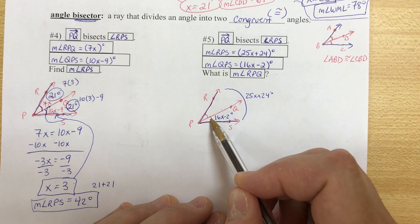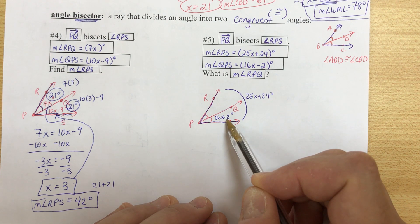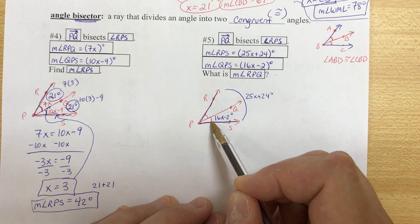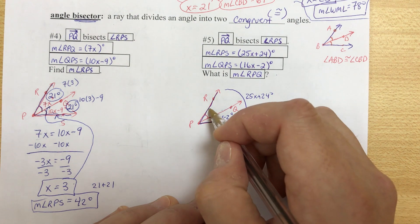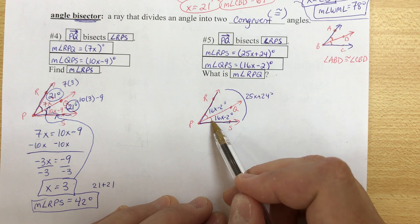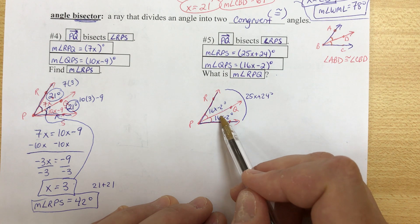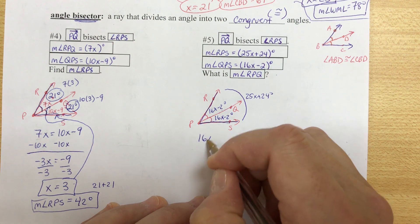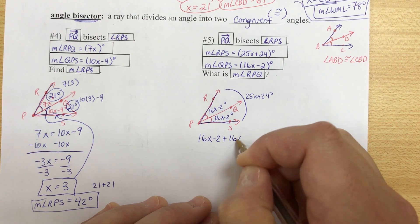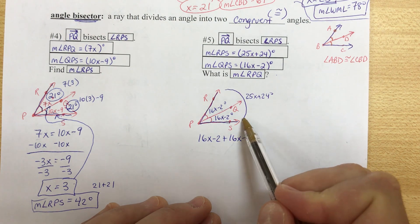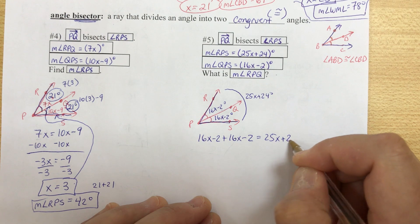These are congruent. Now I don't know what 16x minus 2 is. I don't know x. However, if this angle is 16x minus 2, so is this, because I know that they're equal measures, because they're congruent. Now again, I'm not going to say this equals itself, because I can't solve that. I just get zero. However, if we add up the parts, angle addition postulate, if you add the two smaller angles, you have to get the big one, which is 25x plus 24.